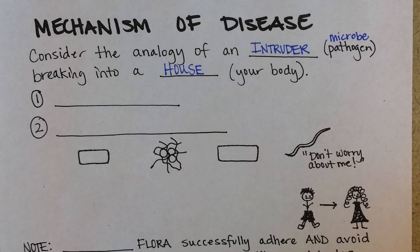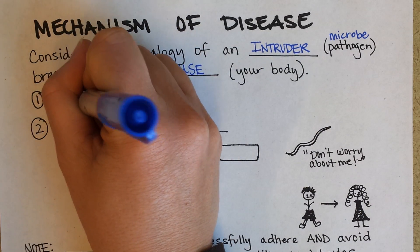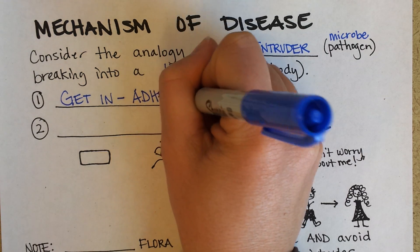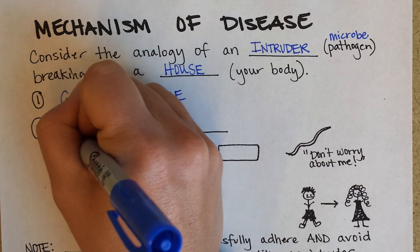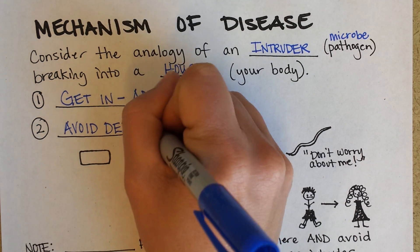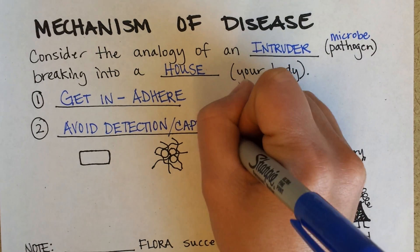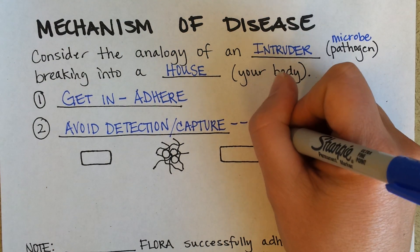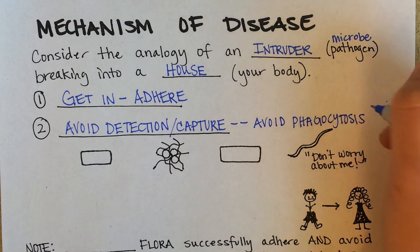Three things have to happen for bacteria to actually make us ill. First, they have to get in — we usually use the word adhere — they have to be able to stick to us. The second thing they have to accomplish is to not have the cops called on them; they need to avoid detection or arrest. In bacteria language, that means they need to avoid phagocytosis — being engulfed by our white blood cells, our macrophages.